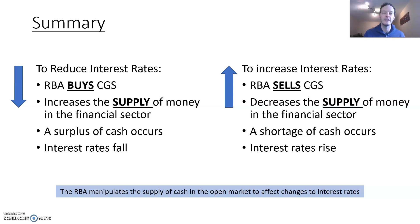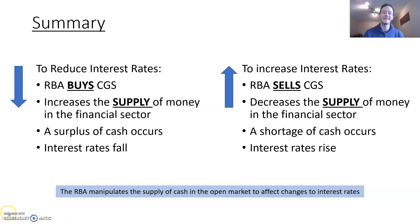To summarize how it all works: the Reserve Bank of Australia manipulates the supply of cash in the open market to effect changes to interest rates. Hopefully that helps — feel free to watch this over again if needed, and thanks for paying attention.